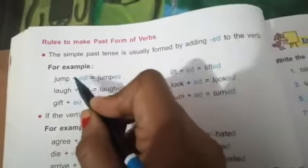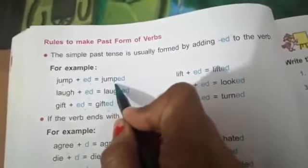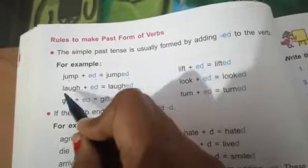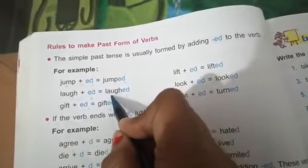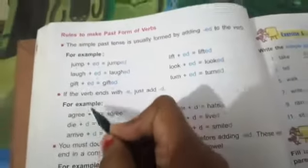Jump is the present form, and after adding ed, it became past form jumped. Laugh is the present form, and after adding ed, we will get laughed. That is the past form. Just like this.